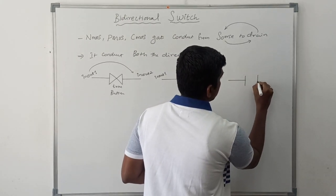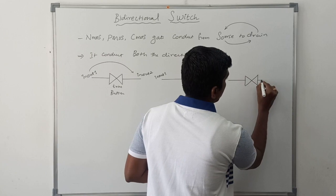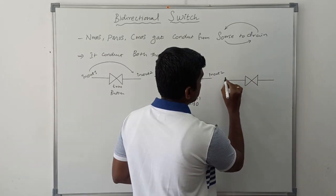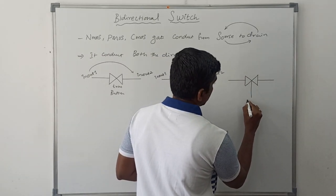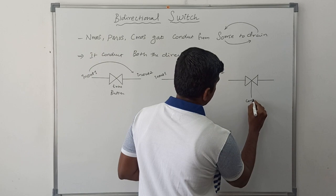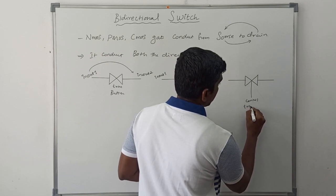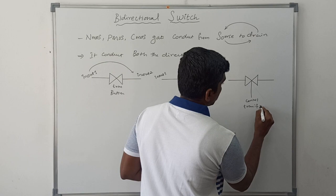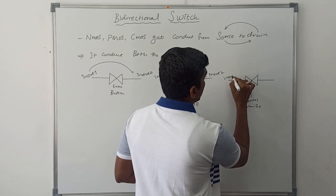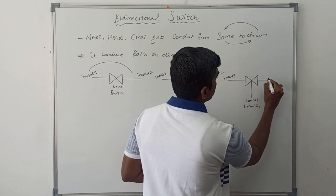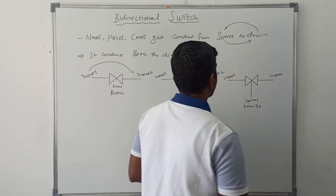The third symbol: whenever the control signal is equal to one, the input is connected to the output. The keyword is TRAN if 1, with ports in/out one, in/out two, and a control signal.